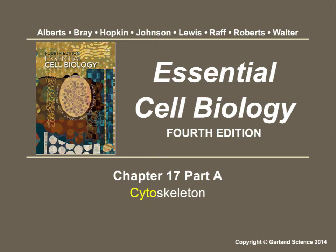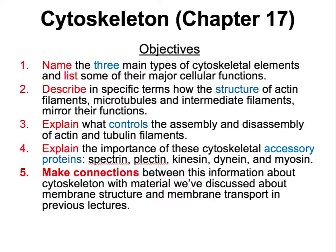This video is on Chapter 17, Part A. Here we discuss two of the three types of cytoskeletal elements: the microtubules and the intermediate filaments. The best way to learn this is to concentrate on where in the cell these elements are found, and then work backwards into their structure and their function.